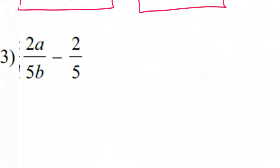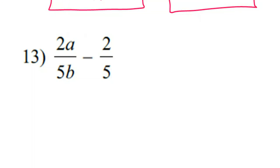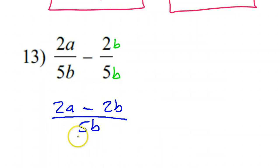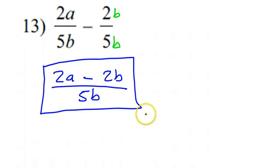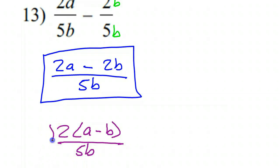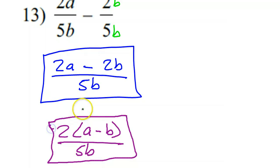Let's go on to number 13. They both have 5, so this side just needs a B. Now they're the same, so I can go ahead and subtract. I'll have 2a minus 2b over 5b. Is there anything common to all three terms? No. So that means this is the final answer. Now if you wanted to pull out that common 2 and write this as 2 times (a minus b) over 5b, you could do that — but you don't need to since nothing cancels.